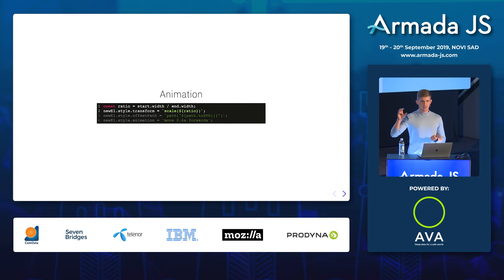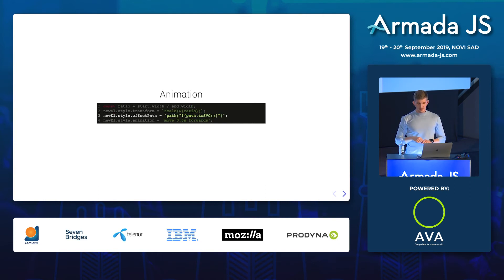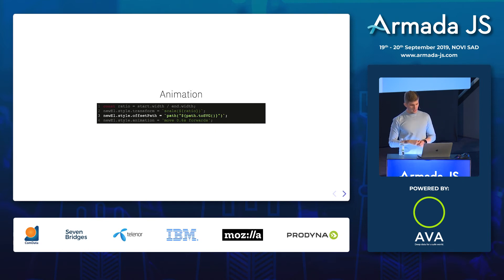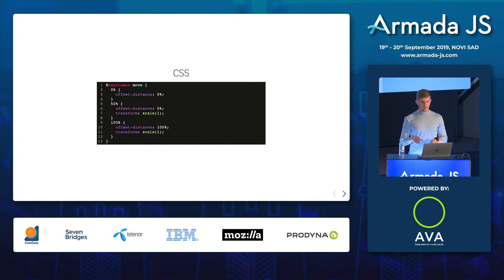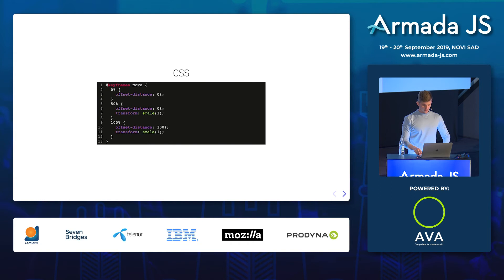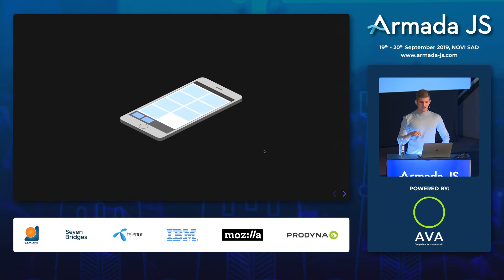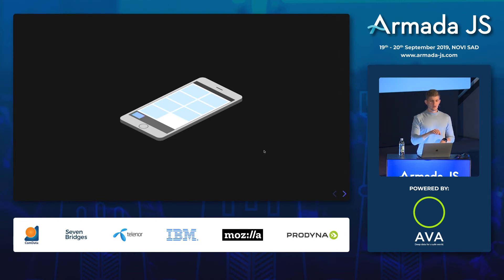Next, we calculate a ratio to scale the element down then back up using the transform scale property. We set the correct offset path using path.toSVG() from the library. Then we set the animation — move 0.6 seconds forwards. In the CSS, from 0% offset distance at scaled size, then scale to normal, and on the last step move to 100% offset distance. However, there's a problem: this works well for this example, but what if we're on a bigger screen, or the click target is really close? Because we hard-coded the duration, a short-distance animation will feel frustratingly slow.